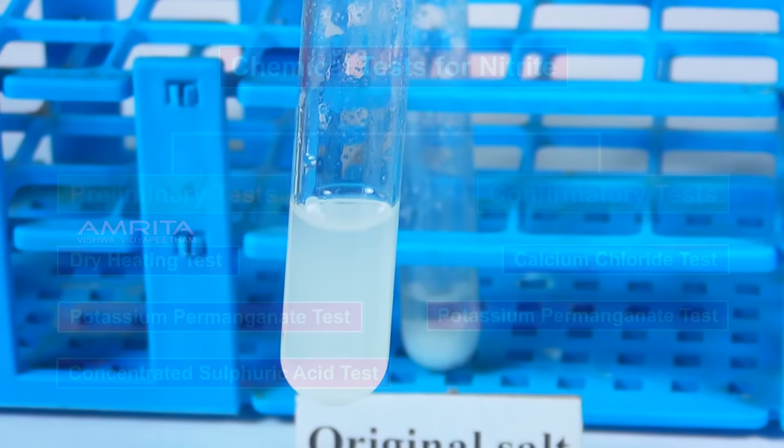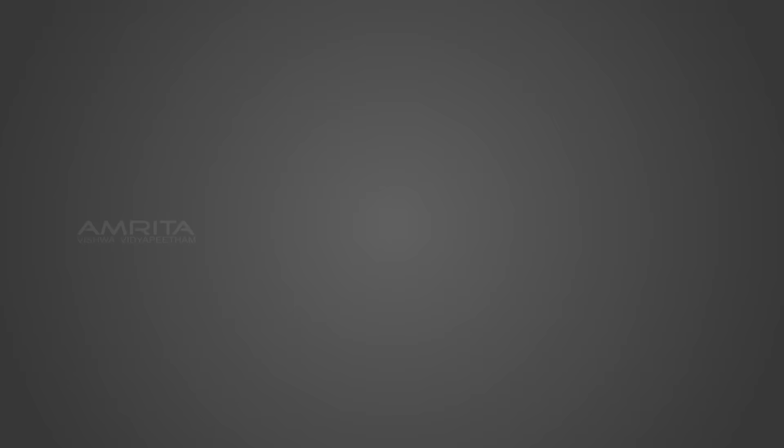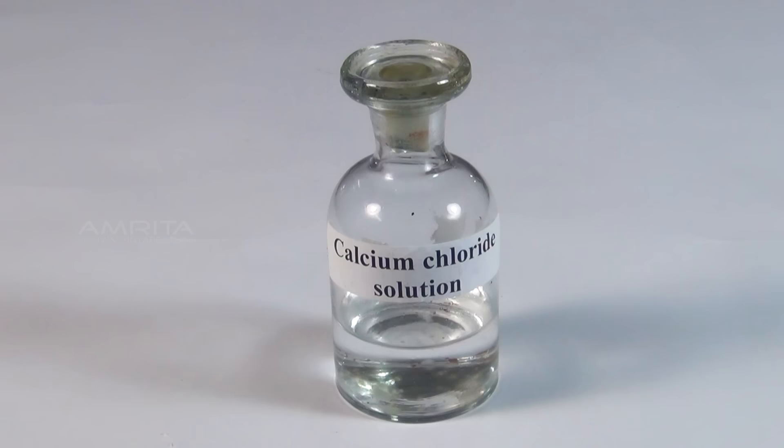Next, we look at the confirmatory tests for oxalate. They are: calcium chloride test and potassium permanganate test. Calcium chloride test. Materials required: aqueous solution of the salt, dilute acetic acid, calcium chloride solution, dilute nitric acid, test tube, test tube holder, droppers, and Bunsen burner.